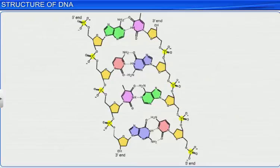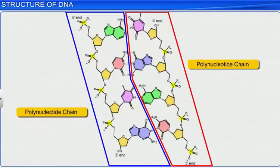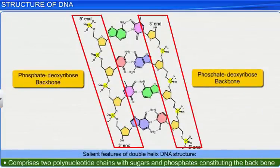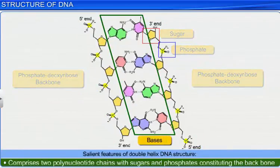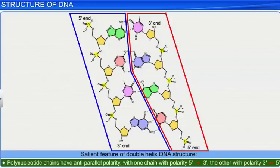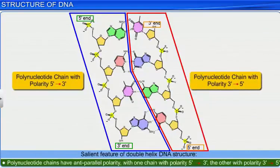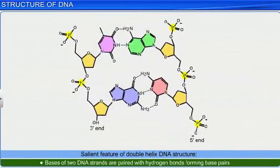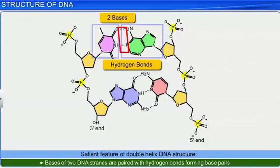A salient feature of the double helix DNA structure is that it comprises two polynucleotide chains, the backbone of which is constituted by sugar-phosphate with bases projecting inside. The double helix structure has several other salient features too. Its two polynucleotide chains have antiparallel polarity. That is, if one chain has a polarity 5' to 3', the other has 3' to 5'. Moreover, the bases of the two DNA strands are paired with the help of hydrogen bonds, forming base pairs.